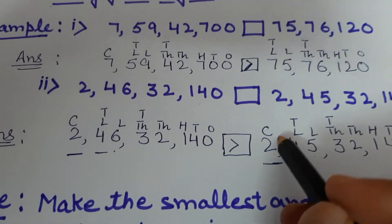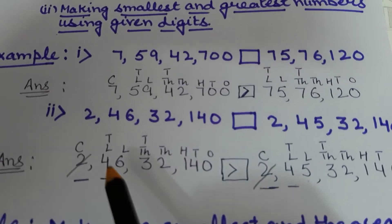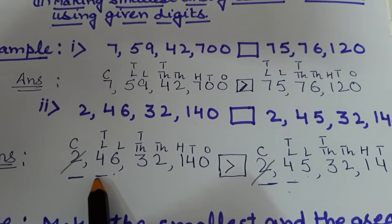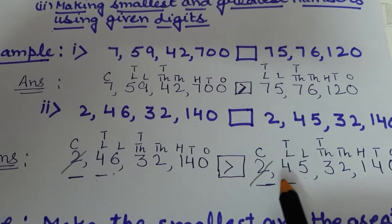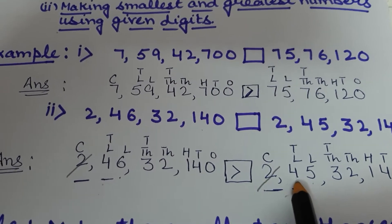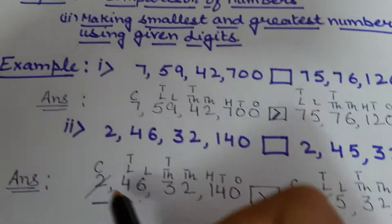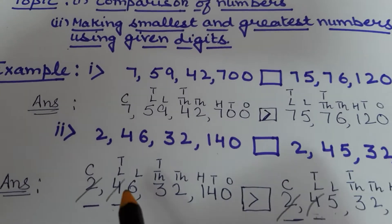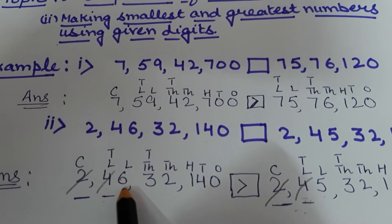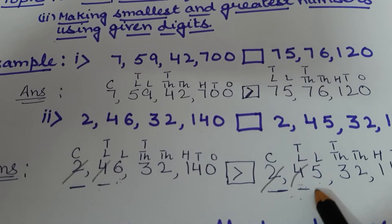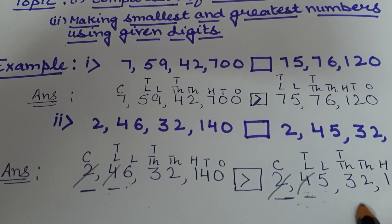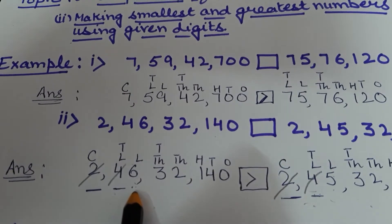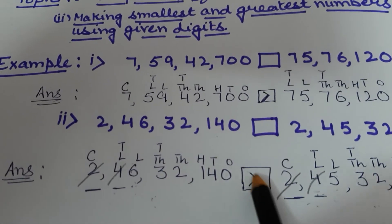Starting from crores: this number has 2 and this number also has 2 — they are the same, so we cannot decide from this place. Move to the next place, ten lakhs: this number has 4 and this number also has 4 — same again. Move to the next place, lakhs: here one number has 6 and the other has 5. It is very clear — the digit with 6 is greater. So that number is larger than the other.